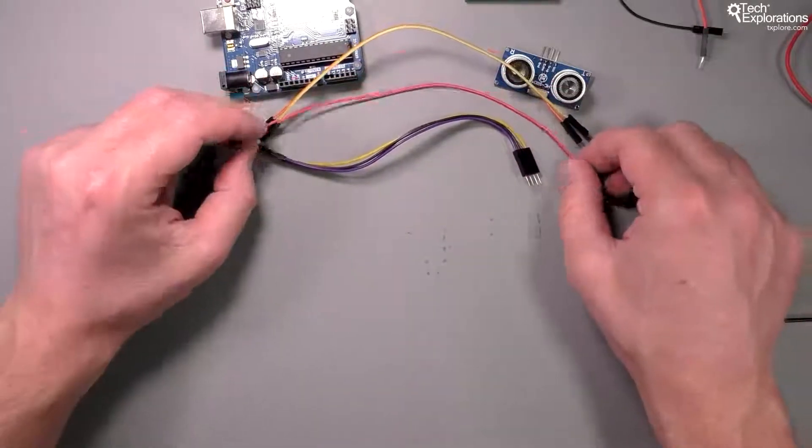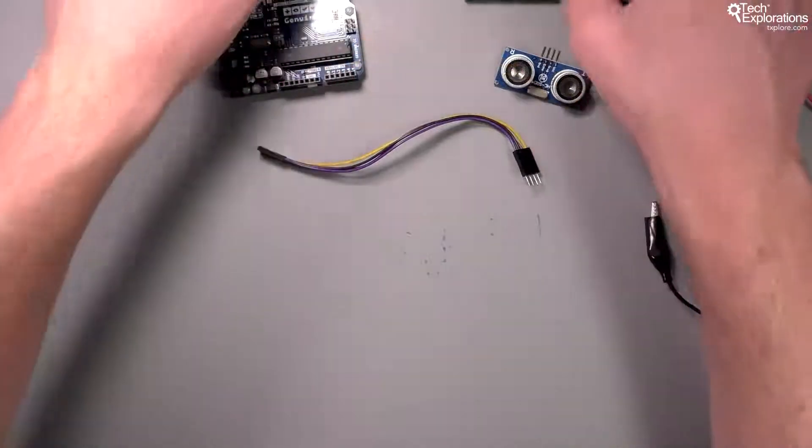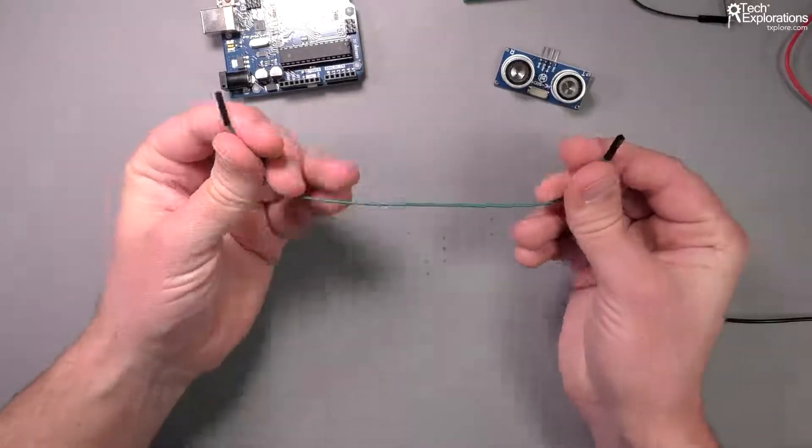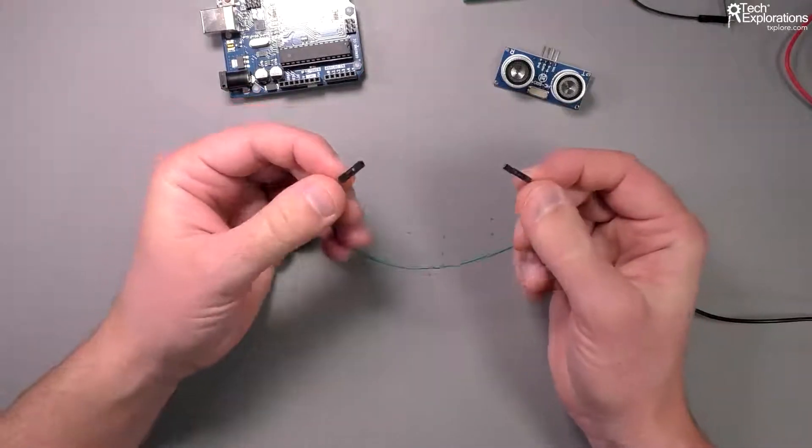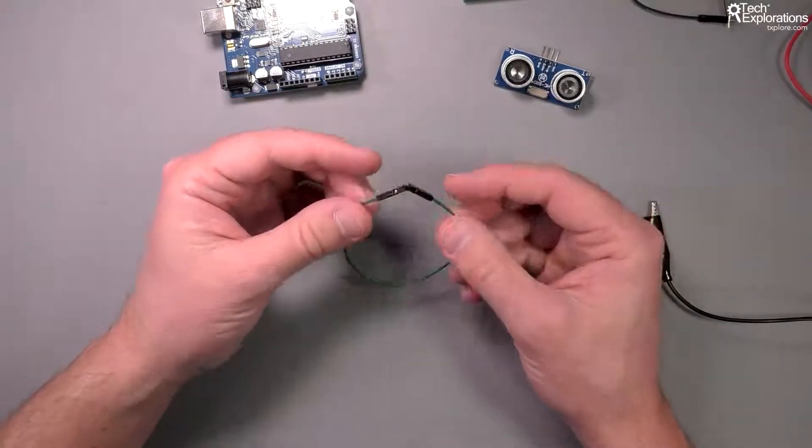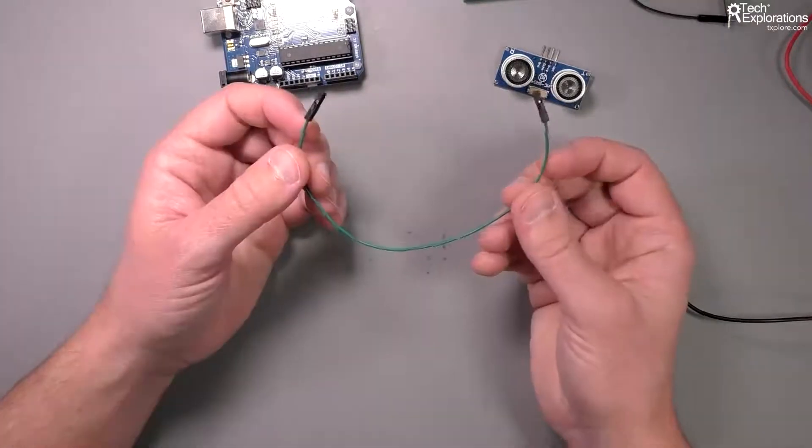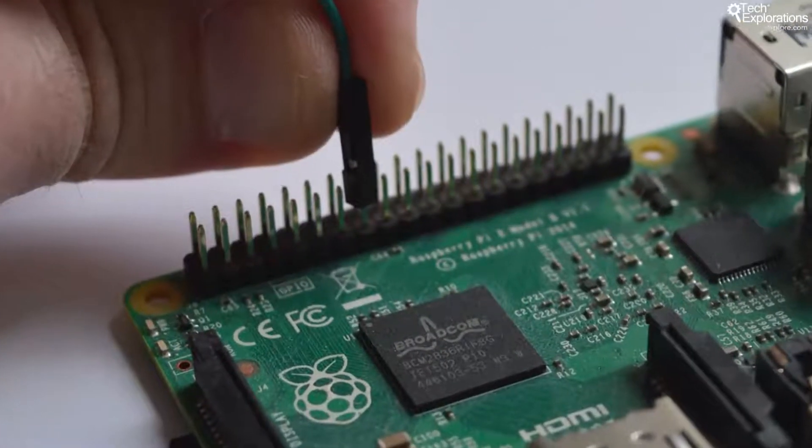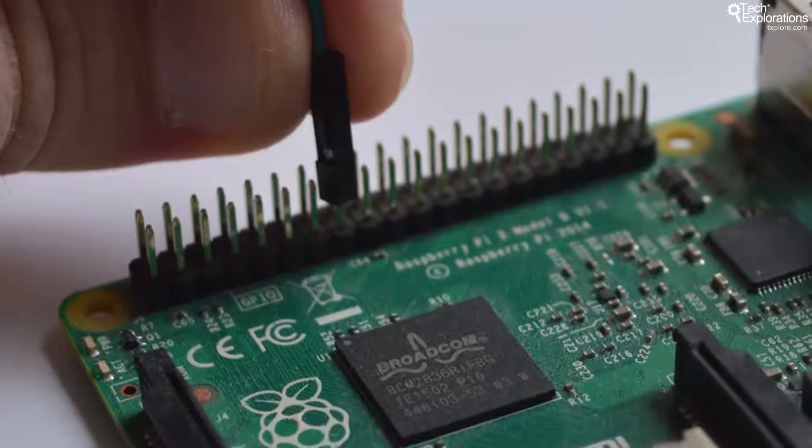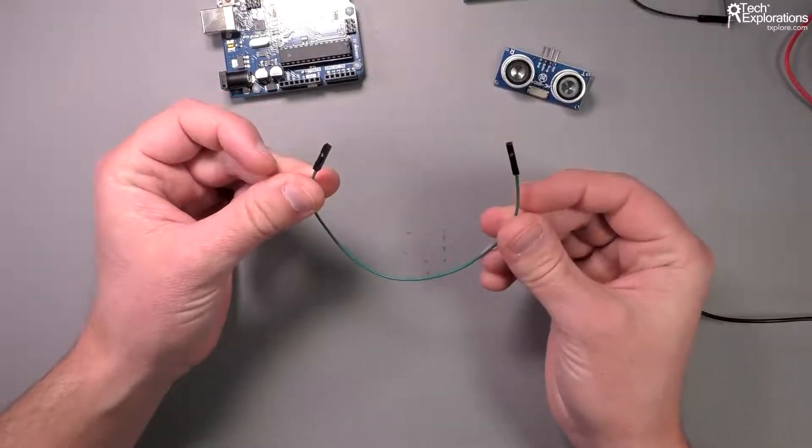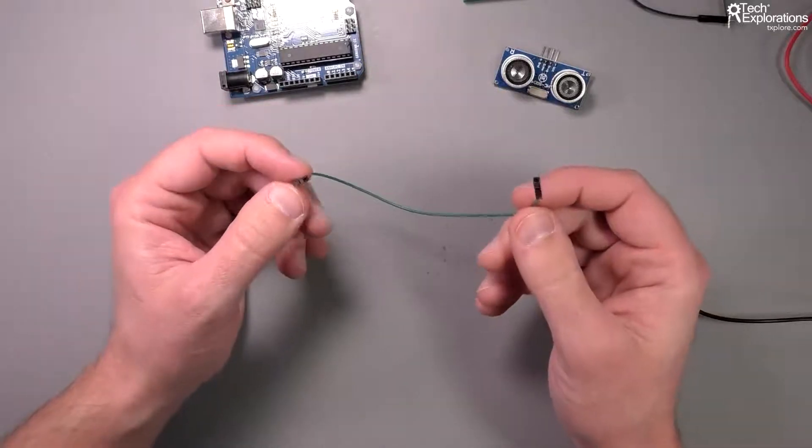You've got male to female jumper wires, but there are more. Here's an example of a female to female jumper wire. Not very commonly used in projects with the Arduino. These are most commonly used on the Raspberry Pi because the Raspberry Pi has male headers instead of the female headers that the Arduino has. So you probably are not going to need any of those to begin with, at least.